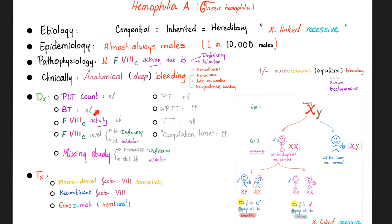Platelet count is normal, bleeding time is normal, because primary hemostasis is fine. Factor 8 activity is low. Factor 8 level could be low if it's a deficiency, or could be normal if it's an inhibitor. To tell the difference — between underproduction and over-destruction — you do a mixing study. If the lab test normalizes, it was a deficiency. If it's still low, it's an inhibitor.